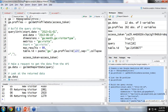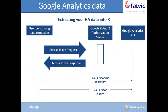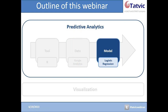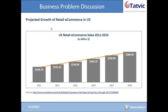Thank you very much for showing us how we can extract Google Analytics data into R. Now that we have been introduced to the tool and know how to extract GA data into R, let's move on and see how we can build the predictive model. This slide shows the projected growth of retail e-commerce in the U.S. E-commerce business is increasing at the rate of 5 to 10 percent every year and this growth is expected to rise. But one of the problems every e-commerce retailer is facing is the problem of product return.